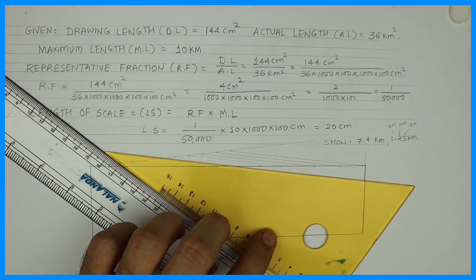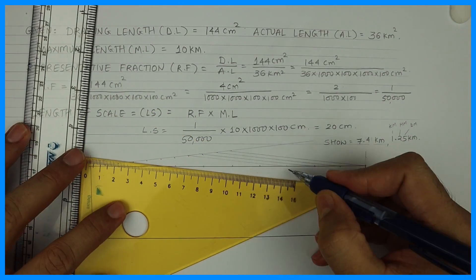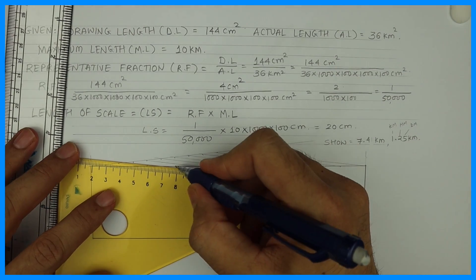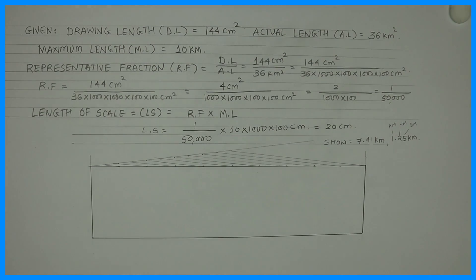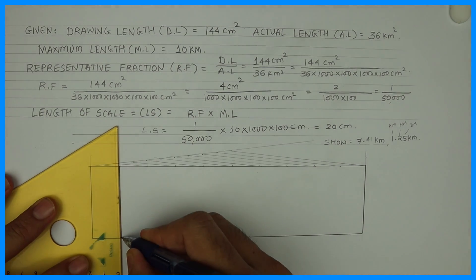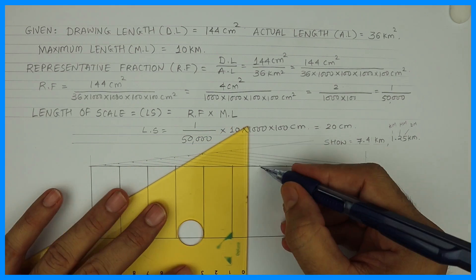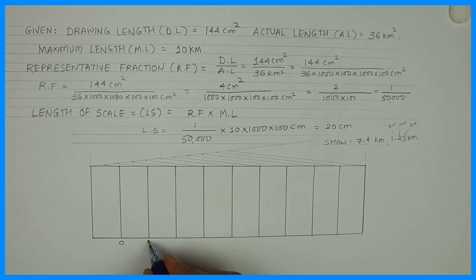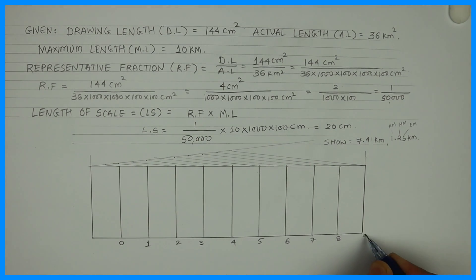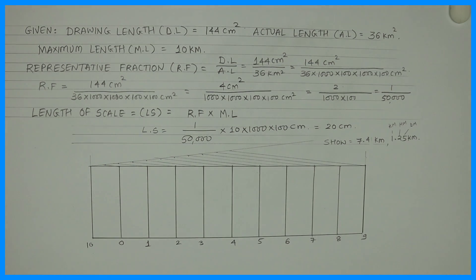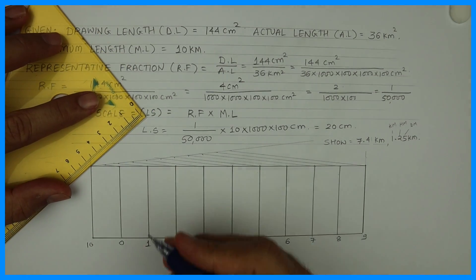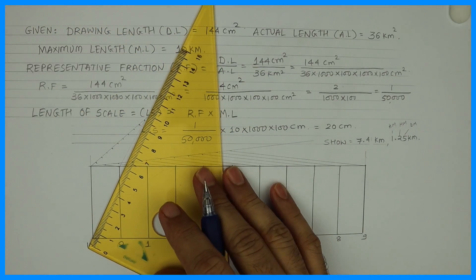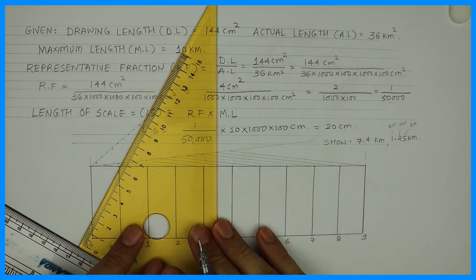We'll divide the 20 centimeter line into 10 parts and write 0, 1, 2, 3, 4, 5, 6, 7, 8, 9. We'll divide the first block into 10 parts because we want hectometer. We'll take an angle and divide into 10 parts. So the first block gives us kilometer and hectometer. Then we need to divide that hectometer also into 10 parts, which we will do by the diagonal scale principle.